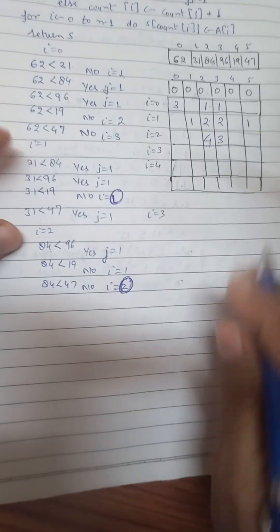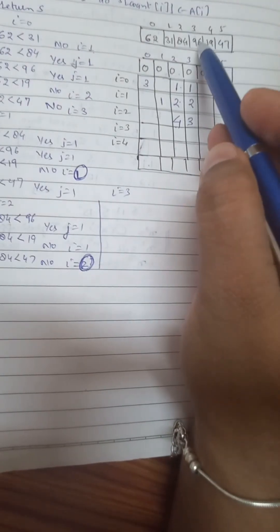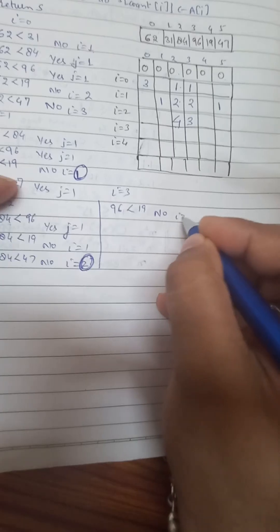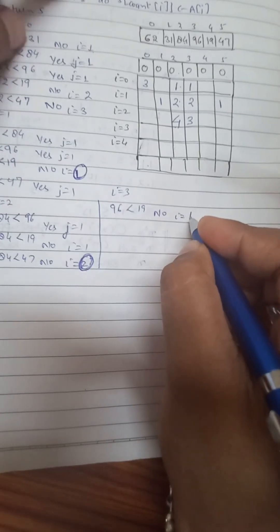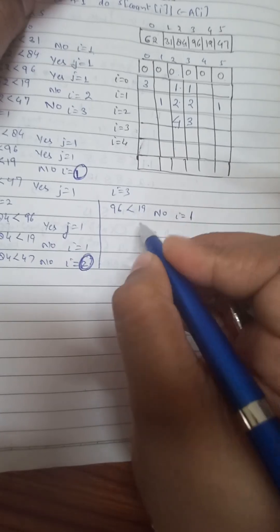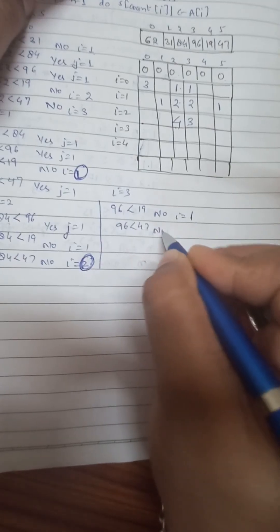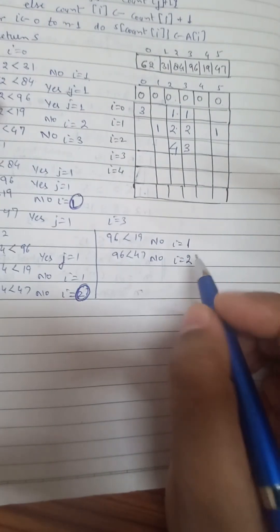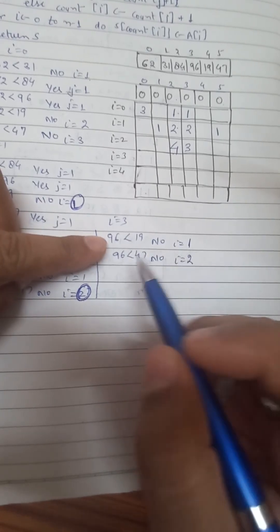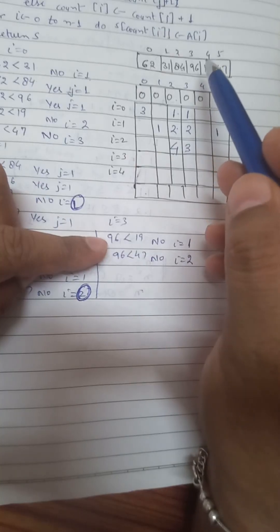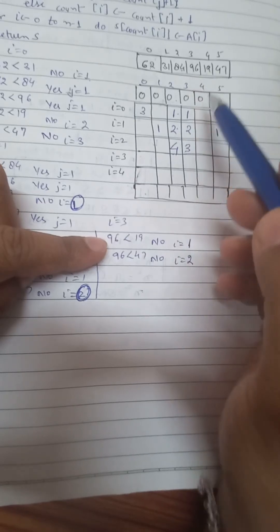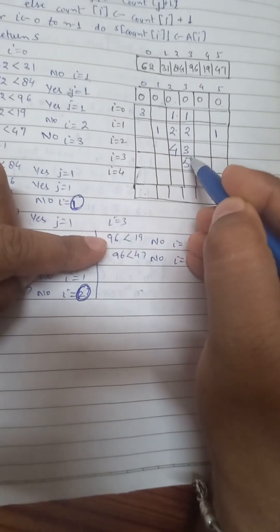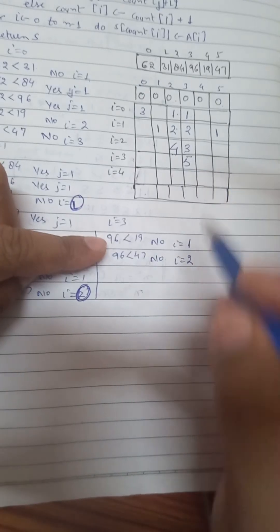Now I value is 3, so we compare the fourth element, 96. Is 96 less than 19? No, so I increments. Is 96 less than 47? No, so I increments again; I value is now 2. 96 is at index 3 with a current count of 3. We add I value 2 to it, giving 96 a final value of 5.